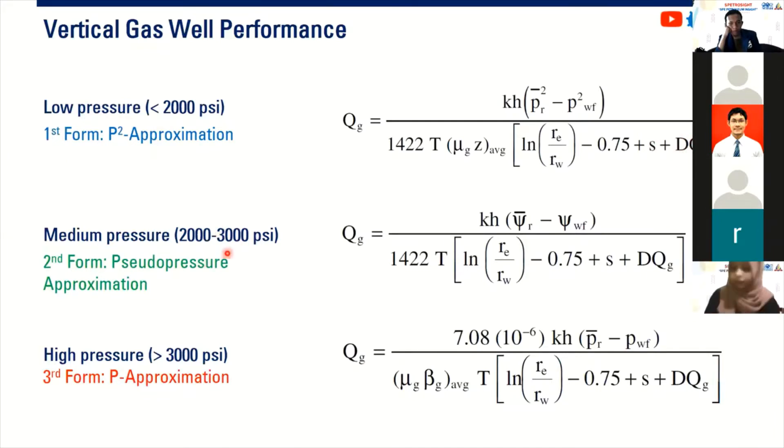And between 2000 to 3000, we cannot do the other way. We need to calculate the pseudo pressure by this one. Above 3000, we use this formula. So far, so good.